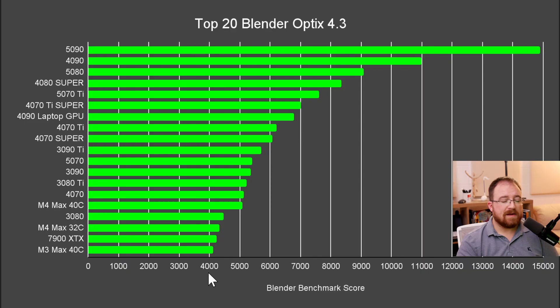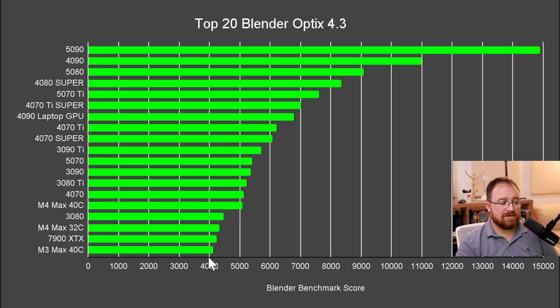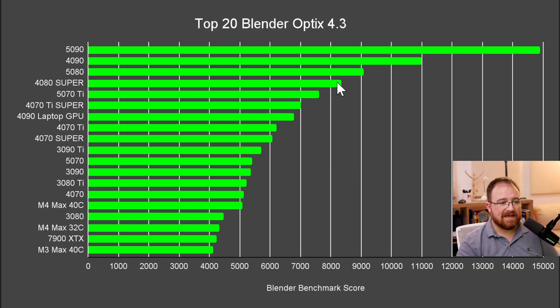There is not much of a generational improvement here in terms of raw speed. It's important to realize that everything on here is really, really fast — we're talking about the top 20 cards for Blender. You can see there is a mild improvement all the way up until the 4080 Super, and we get this doubling in speed from the M3 Max 40-core all the way up to the 4080 Super.